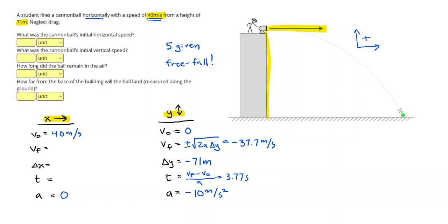Alright, we can actually go ahead and let's answer the first three questions. The initial horizontal velocity was 40 meters per second. Initial vertical was zero. The ball remained in the air for 3.77 seconds.